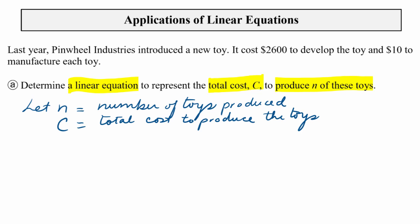So we need something that's acting as some sort of a rate. So do you see anything in the given information? Now let's read it again. It says here, last year Pinwheel Industries introduced a new toy. It cost $2,600 to develop the toy, and $10 to manufacture each toy. So do you hear a rate in there somewhere that could be acting as our slope? Do you hear a rate?